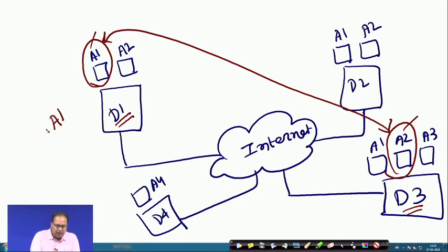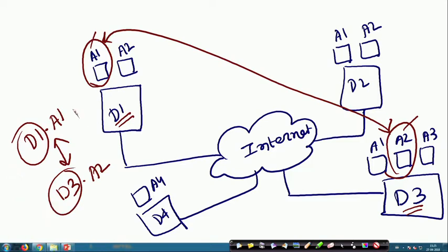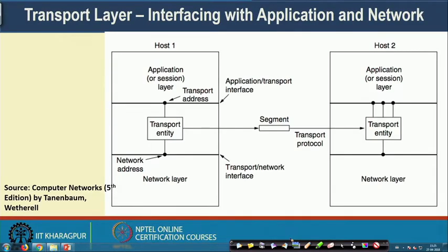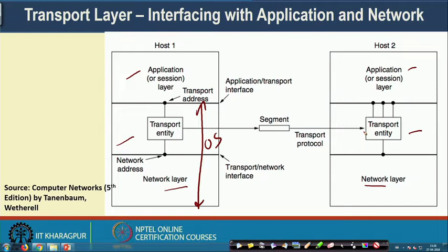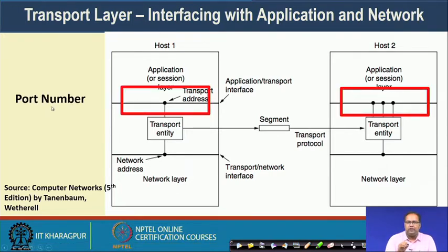At the network protocol stack, you first need to uniquely identify machines—D1 and D3—and also ensure that application A1 at D1 communicates with application A2 at D3. To achieve this, two different addresses are used. At the network layer we have the IP address, and at the transport layer we use the port number to uniquely map a transport entity to a particular application.